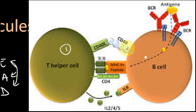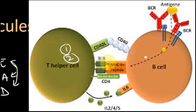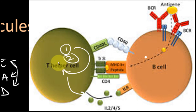This peptide-MHC presentation is recognized by the T cell receptor on T helper cells, generating a signal for the B cell to become activated. A second signal comes from CD40 ligand present on the B cell surface, which binds with CD40 receptors on T helper cells. These signals activate the T helper cells, which in turn activate B cells.